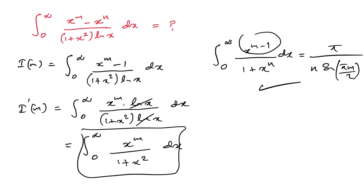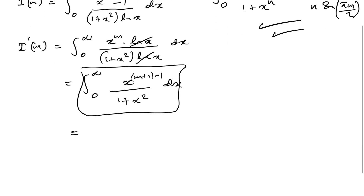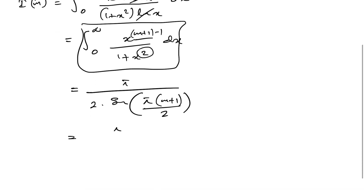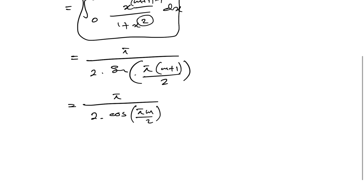Here we have m, so we can write m plus 1 minus 1 in the exponent. According to the known formula, this equals pi over 2 (since n equals 2) times sine of pi times (m plus 1) over 2, which simplifies to pi over 2 times sine of (pi/2 plus pi·m/2), which equals pi over 2 times cosine of pi·m/2.